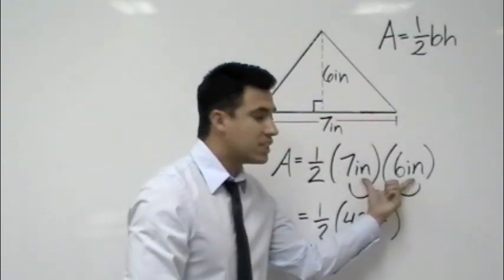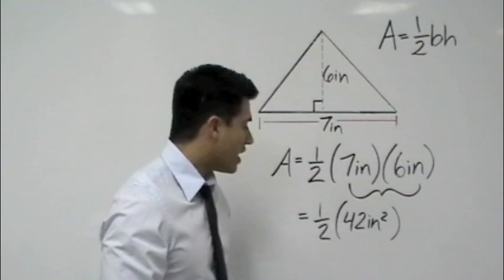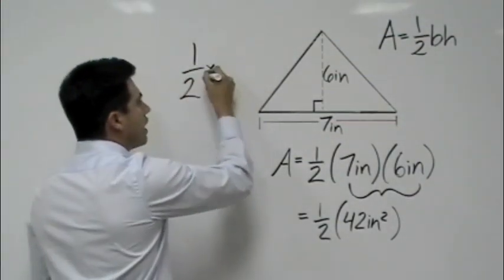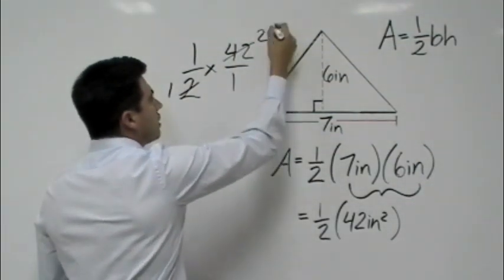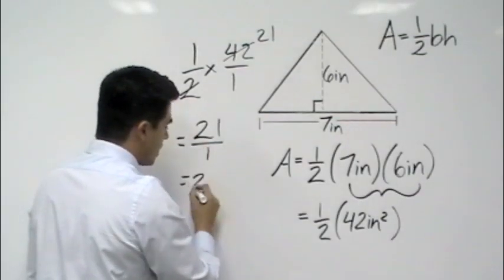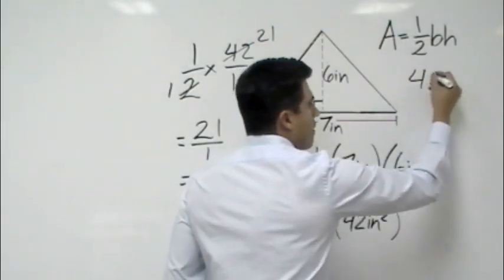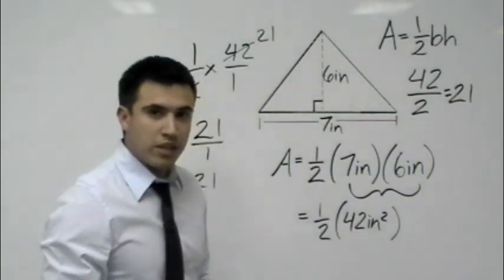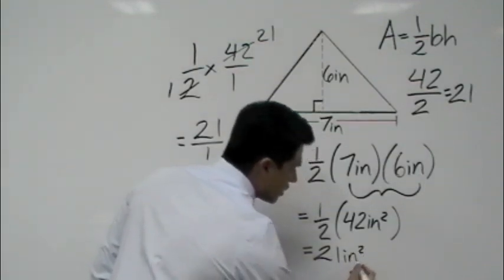Which would give me one half times 42 inches squared. Six times seven is 42 and inches times inches is inches squared. Now we can go ahead and divide that. You can actually multiply it. One half times 42 over 1. We can cross cancel and that would be 21 over 1 or just 21. Or you can go ahead and take 42 and just put it over 2, which will give you 21 as well. Either way, they both work to know that our area is equal to 21 inches squared.